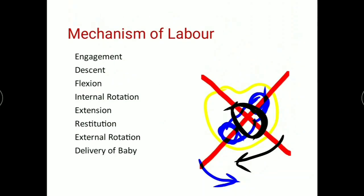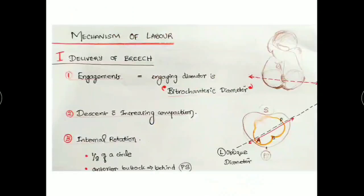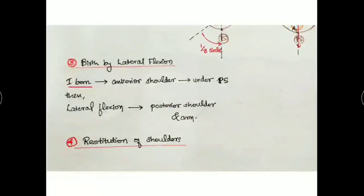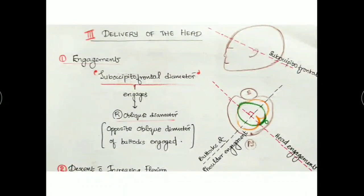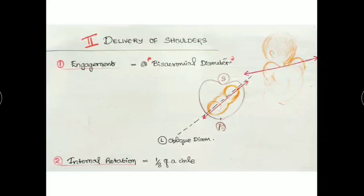Next, the mechanism of labour in breech. We divide the mechanisms into three headings: first, delivery of the breech - the buttocks; second, delivery of the shoulders; third, delivery of the head of the fetus. It is easier because we have already discussed the normal mechanism - we just need to see how it differs.